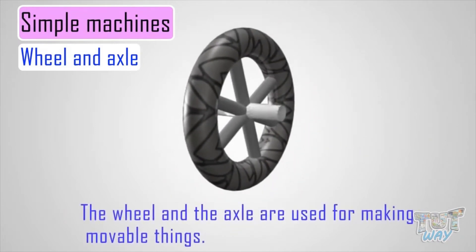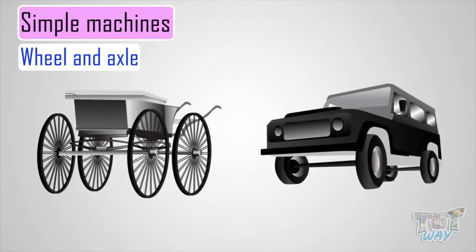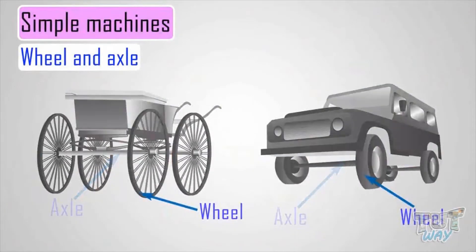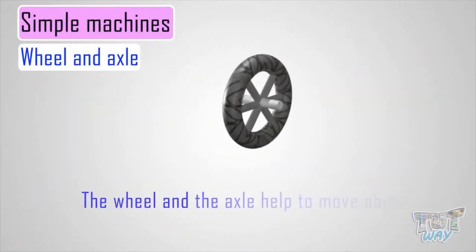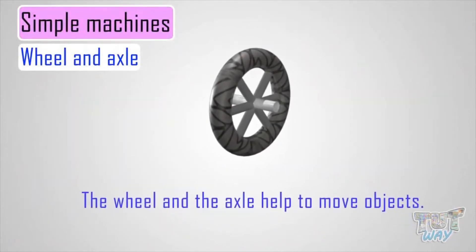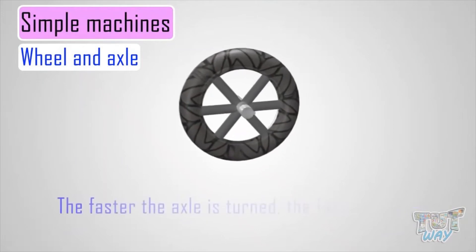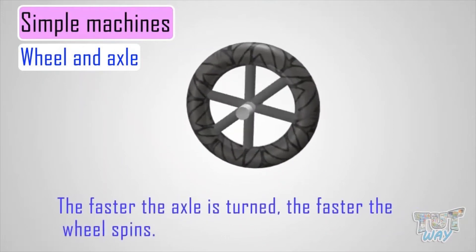The wheel and axle are used for making moving things. All vehicles are made using the wheel and axle. A wheel and axle helps to move objects. The faster the axle is turned, the faster the wheel spins.